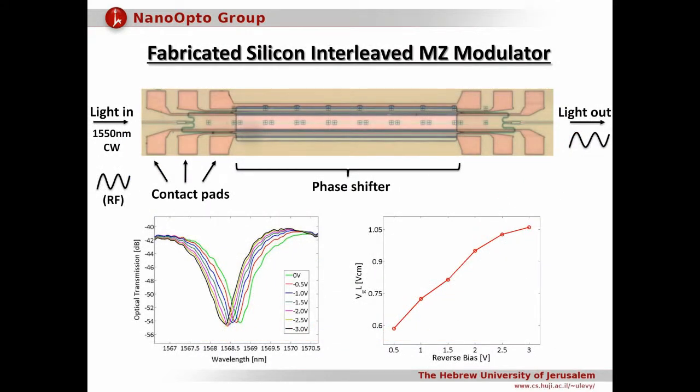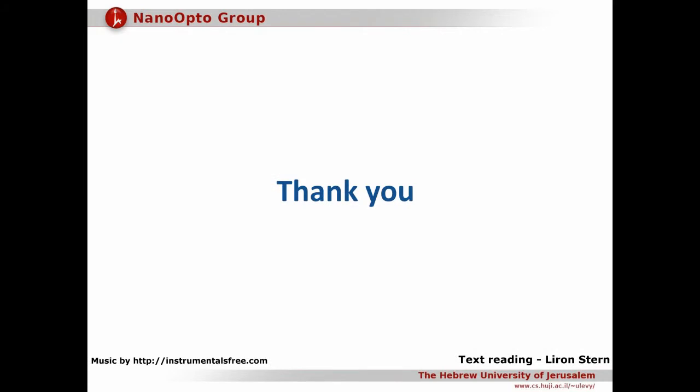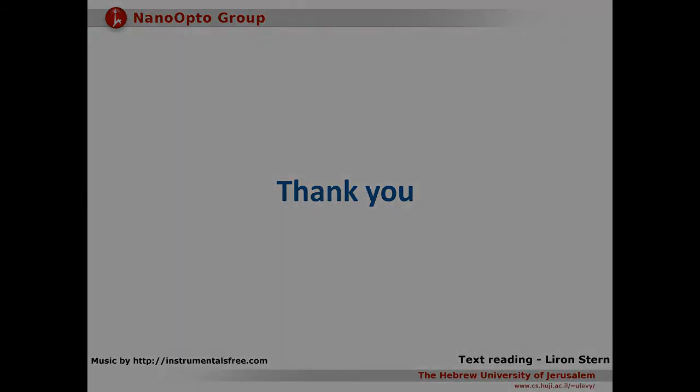To conclude, we have demonstrated a chip-scale miniaturized silicon photonic modulator with a record figure of merit of 5 volt dB and a very good VπL of 0.75 volt centimeter. The device can be further improved to demonstrate high operation bandwidth.